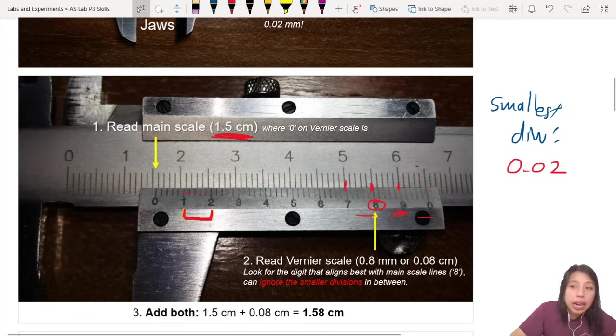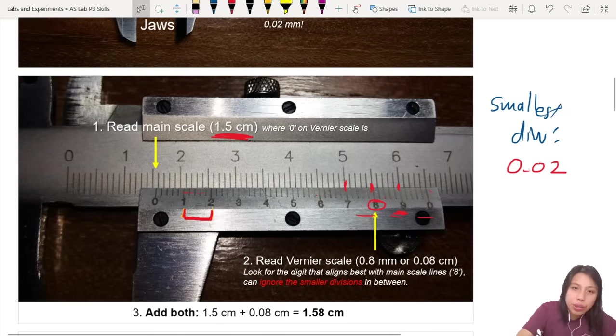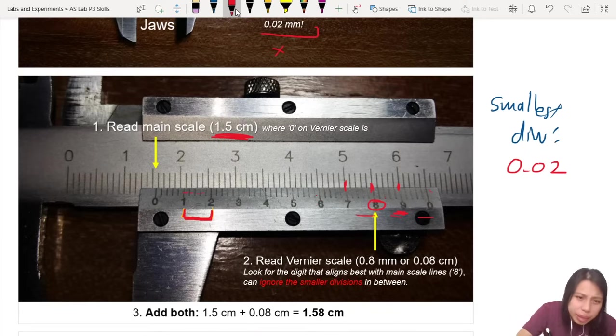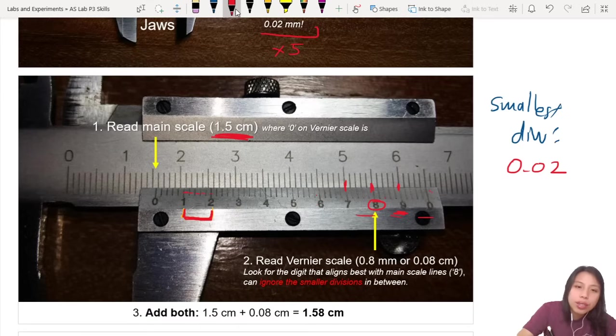One millimeter? Is that our smallest division? Nah, it is 0.02 times how many box, how many I think there? One, two, three, four, five times five. Oh my eyes. So that's 0.1 millimeter.